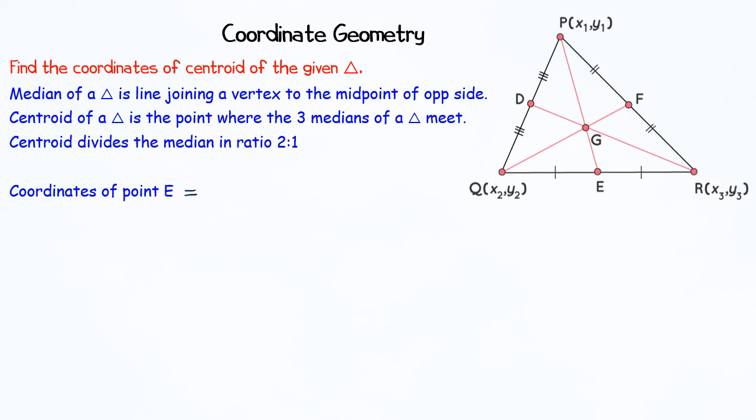Coordinates of E are (x₂ + x₃)/2 and (y₂ + y₃)/2. Now in the line segment PE, we know the coordinates of P, which are x₁, y₁.